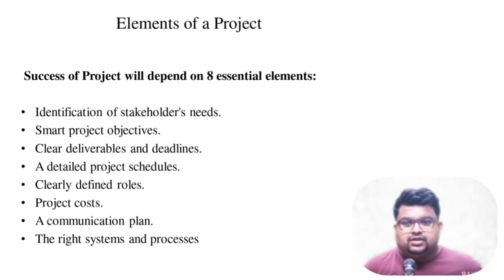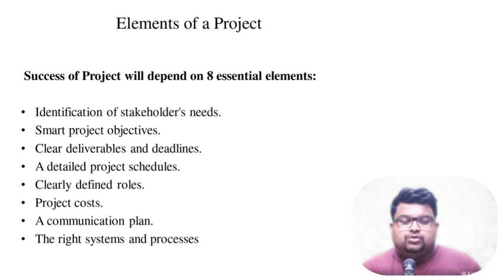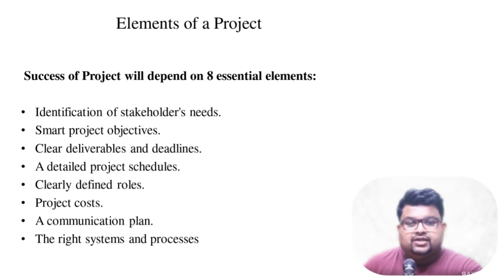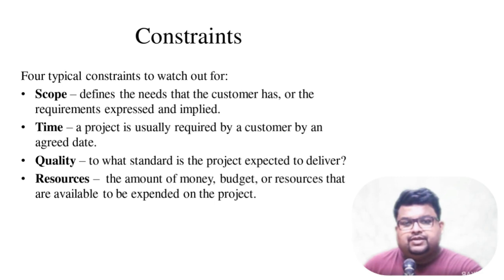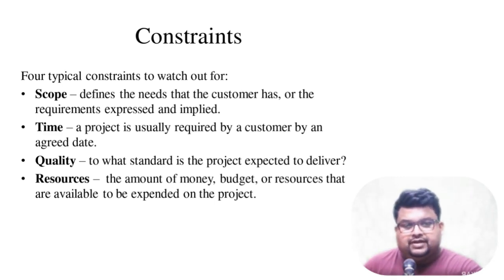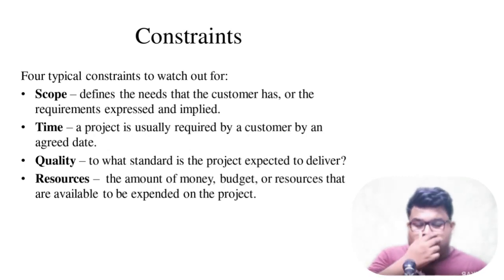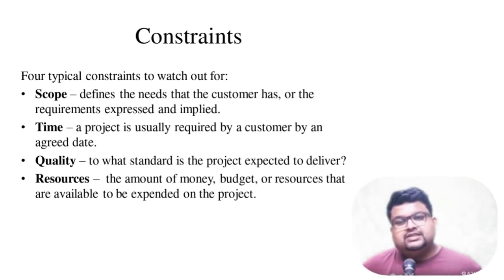I hope my audio is clear to all of you. Last and most important: the right systems and processes. If you have good systems and processes that are going to help you complete your project, then no one can stop that particular project from being successful. Whenever we talk about a project being successful, our success depends on four things, and those four things are called constraints. In project management, we need to understand these constraints very carefully.